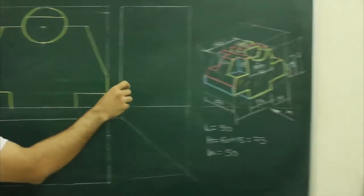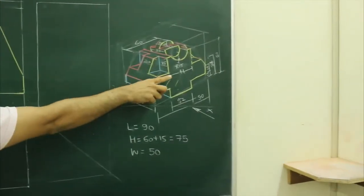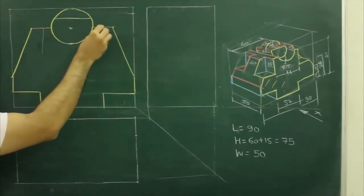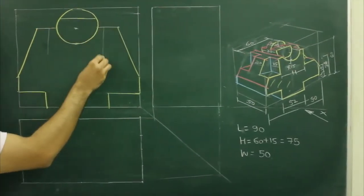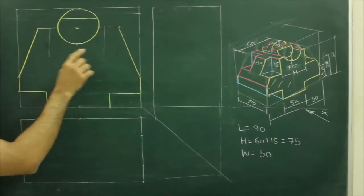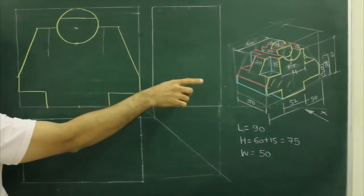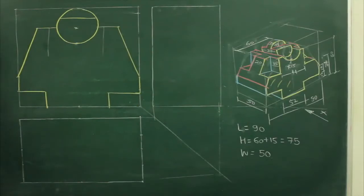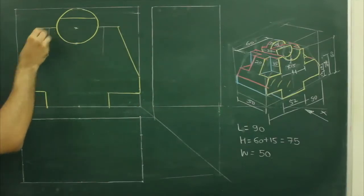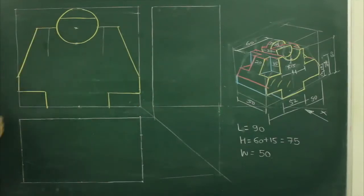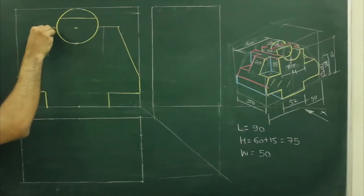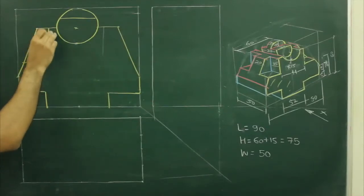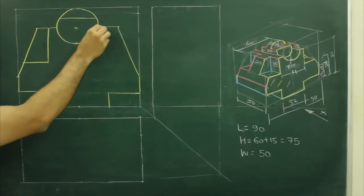After that, they have given 44. So that means from center, we need to take 22 on both the sides. And if you see height, the given height is 60 minus 34. So that would be 26. We will take 26 from here, take 22 from here, and go down by 26 and draw a line like this.